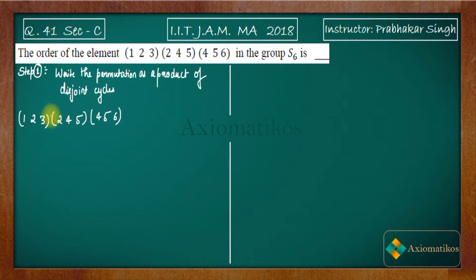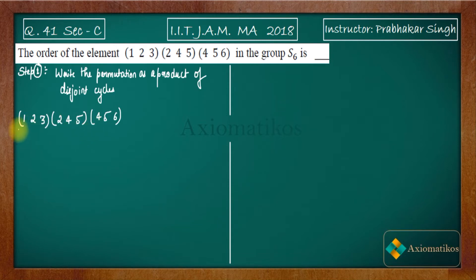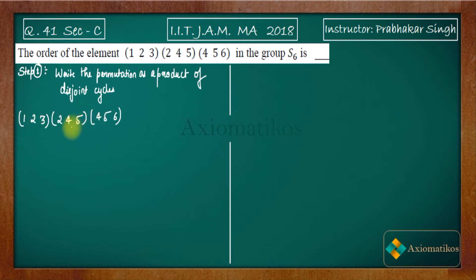Step one is to write your permutation as a product of disjoint cycles. Right now we don't have disjoint cycles — two appears in multiple cycles, as do four and five. That means we have a product of three cycles, but since each cycle contains an element from another, they are not disjoint. So we will write this permutation in standard format and then determine the order.